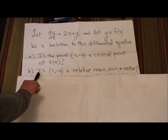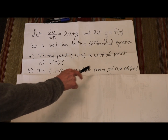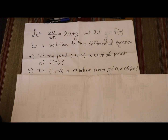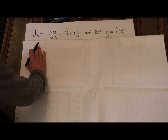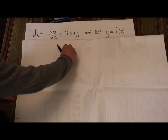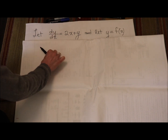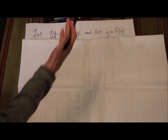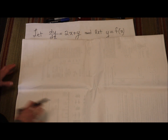Let's turn our attention to part b. Is (1, -2) a relative max, min, or neither? Often when we're looking for relative min and maxes, we use the first derivative test — we do our number line, put our critical point down, look for points to the left and to the right. But that's not going to work here because I have both x's and y values. I don't know how I'm going to go to the left and right of the point (1, -2).